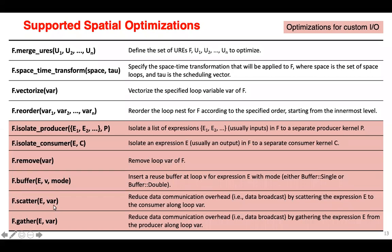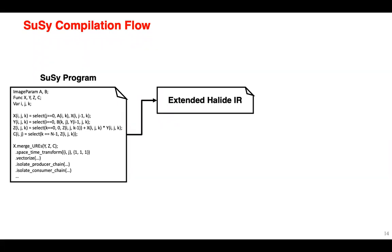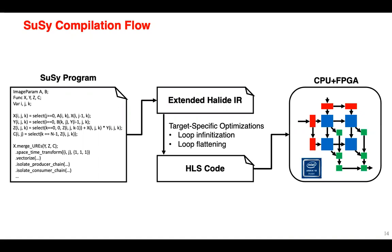This is a list of other supported spatial optimizations — for more details, please refer to our paper. Notably, we support a rich set of spatial optimizations for describing custom IO networks, which is extremely important for generating high-performance systolic arrays. Regarding our compilation flow: given a SUSI program, we first lower it to extended Halide IR, where we perform all user-specified spatial optimizations, then automatically apply target-specific optimizations like loop internalization and loop flattening, and then generate HLS code. We rely on the HLS compiler to deploy the application to physical systolic arrays on FPGAs.